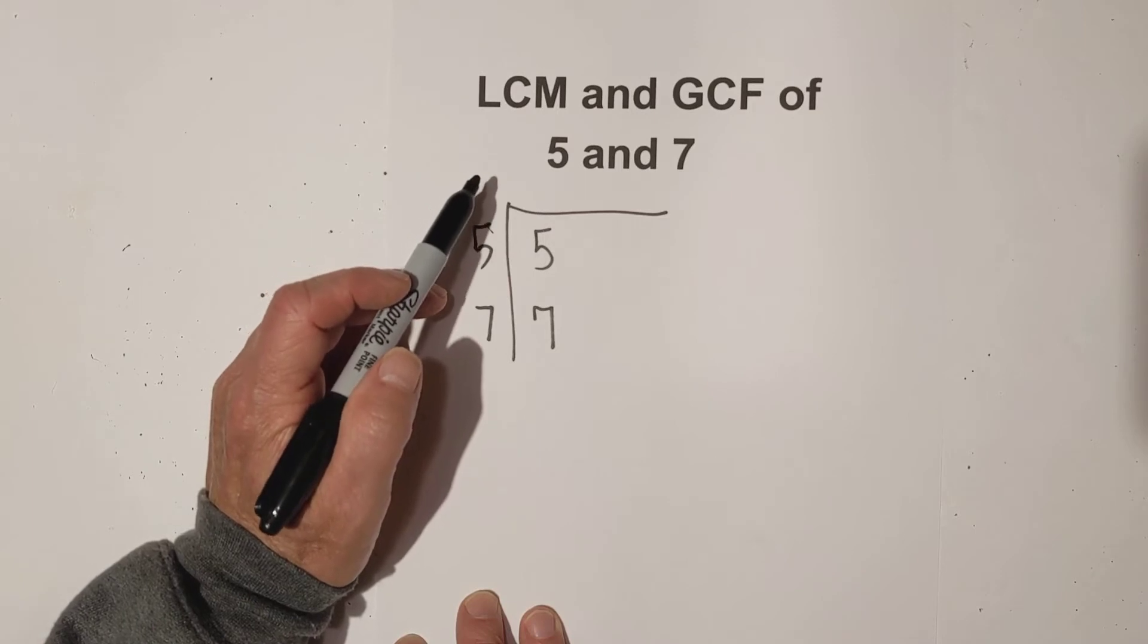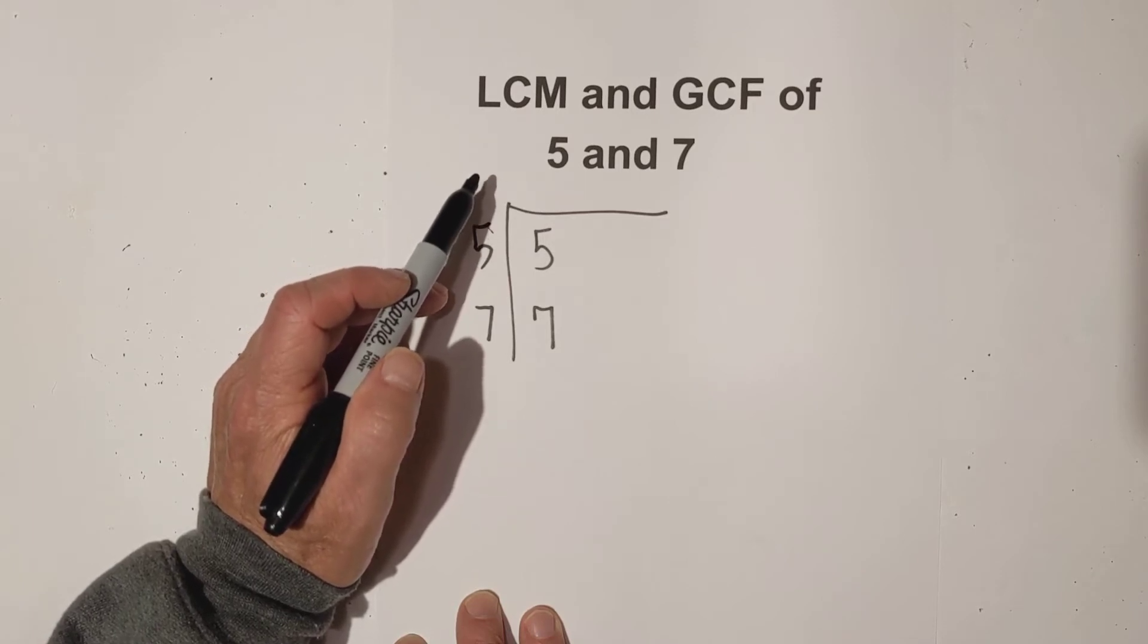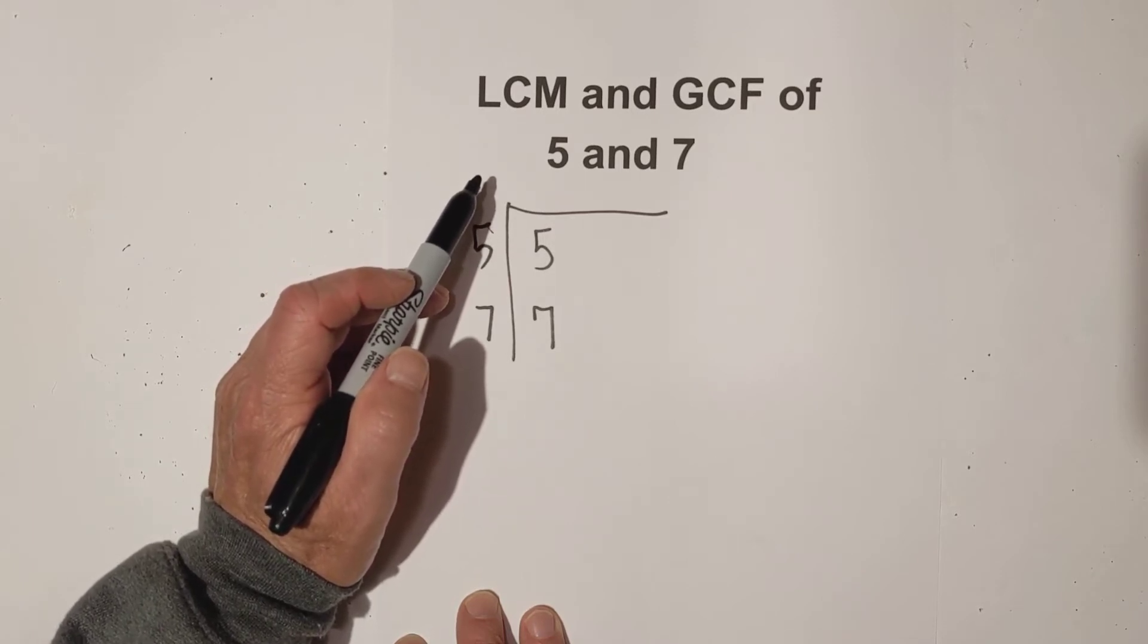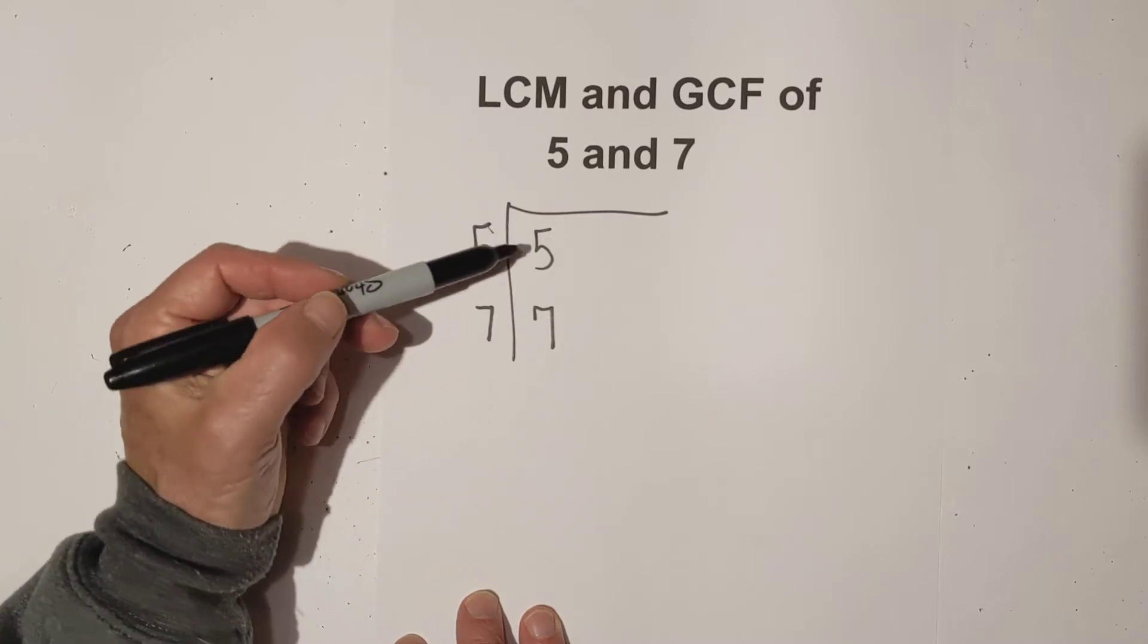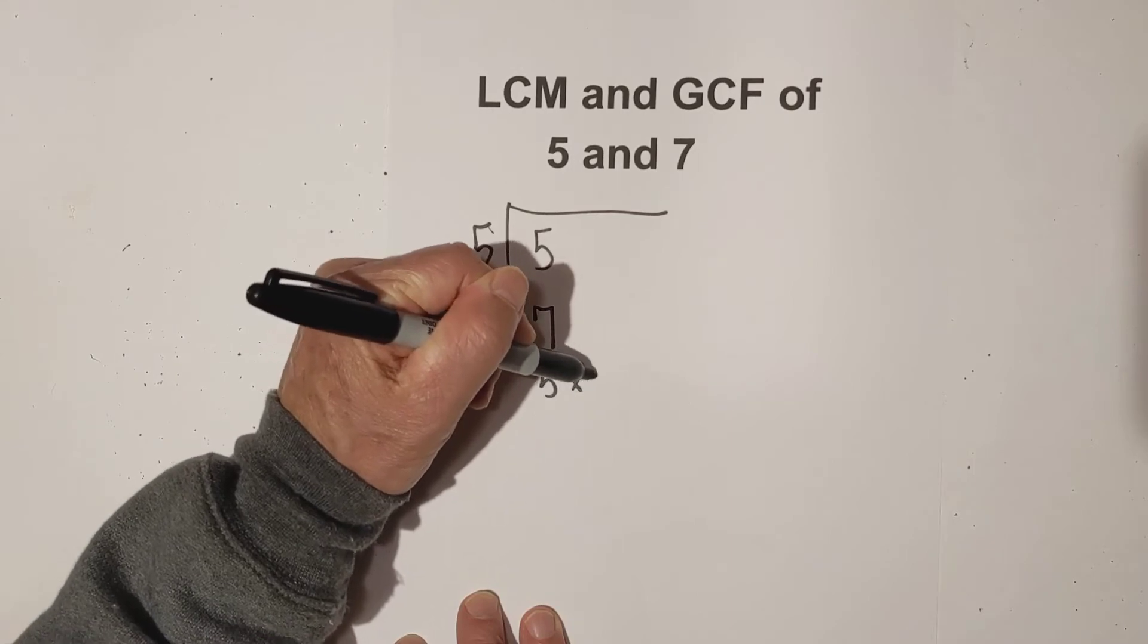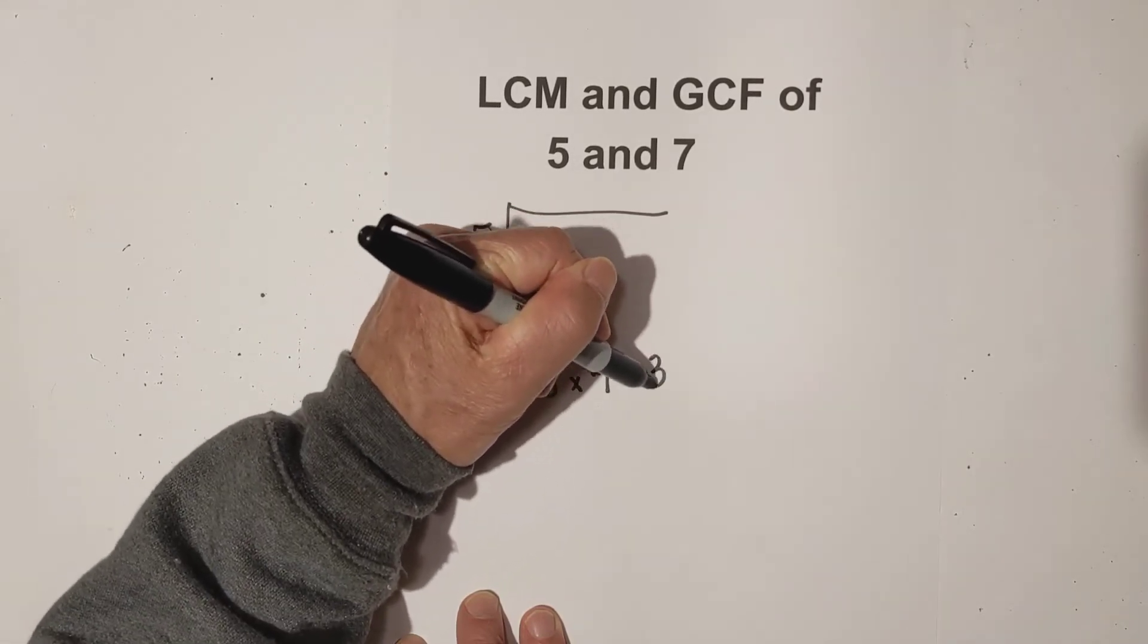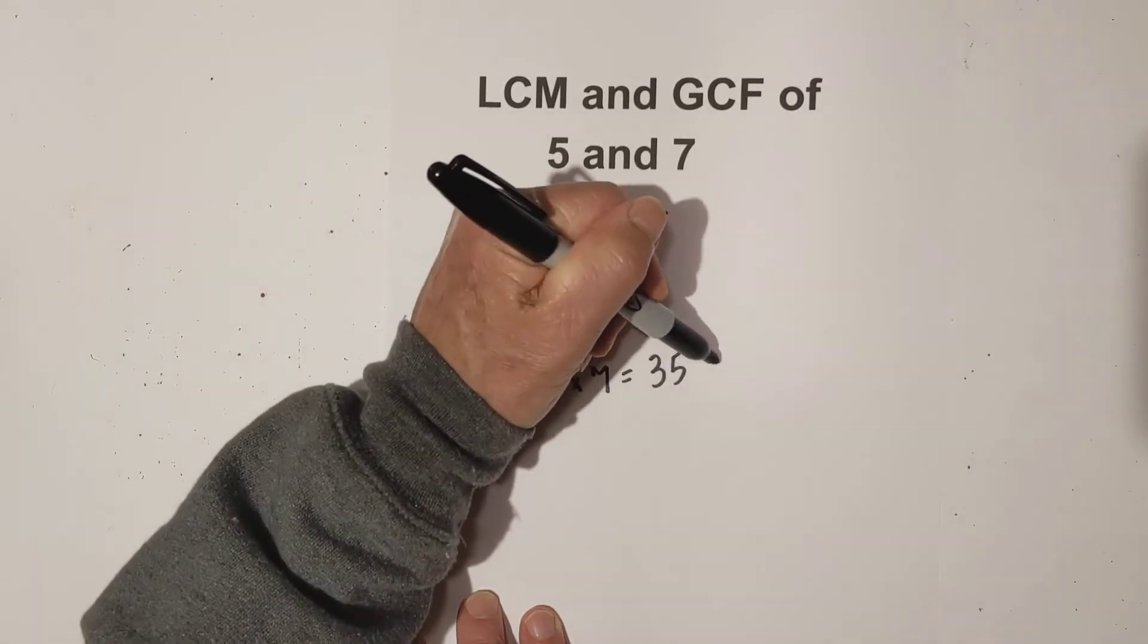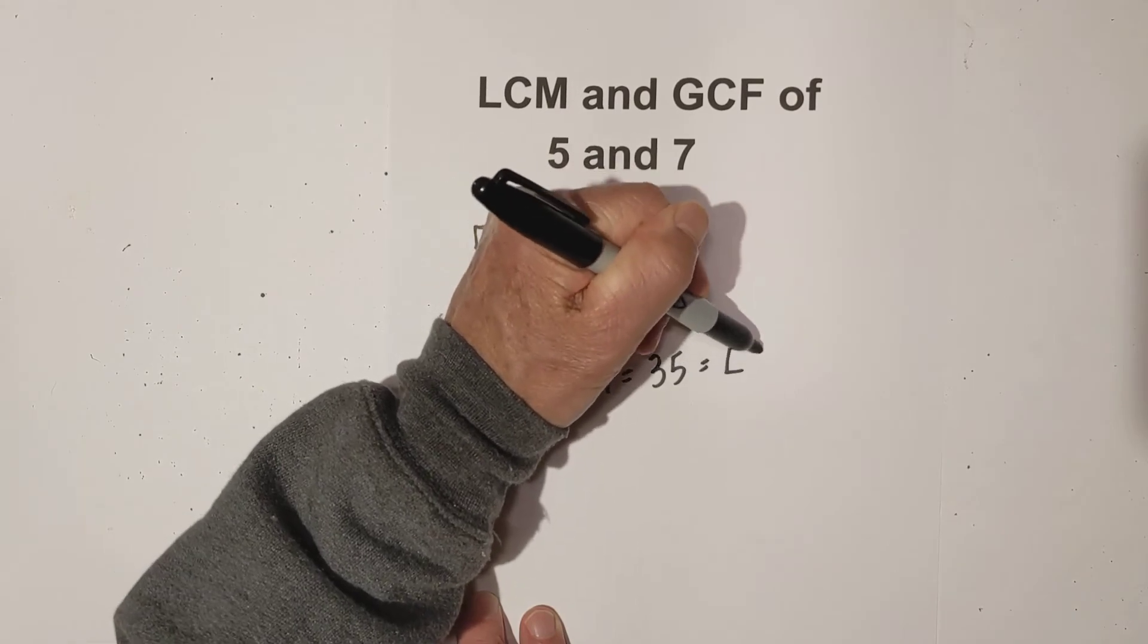The rule is if you had 2 or more of the same number then you would only bring down one number. Since I don't I just multiply 5 times 7 which is 35 and so the LCM equals 35.